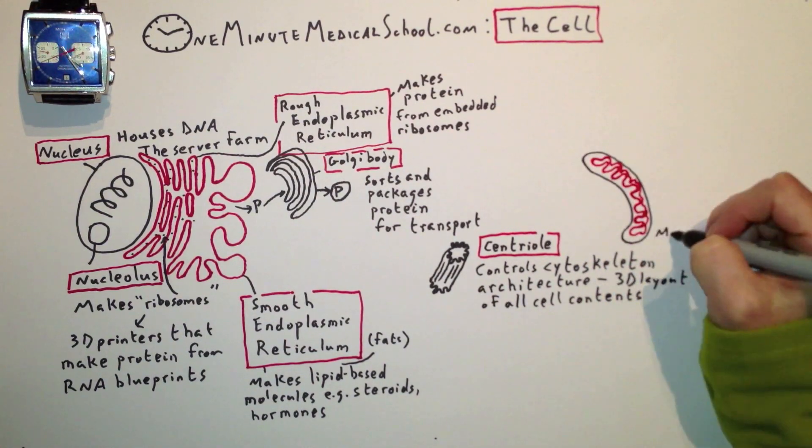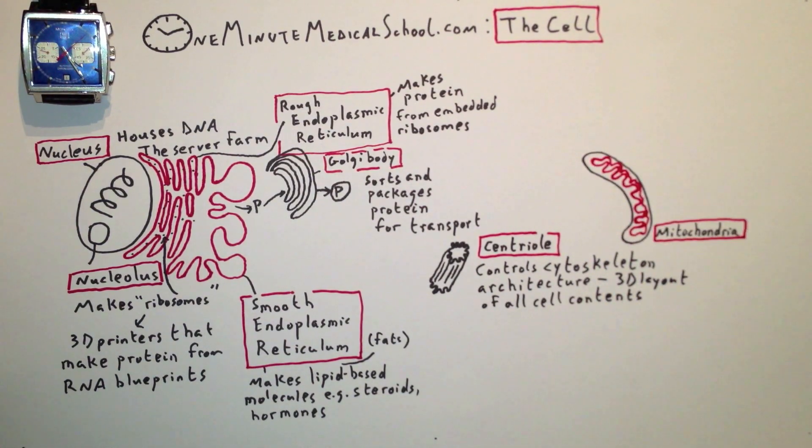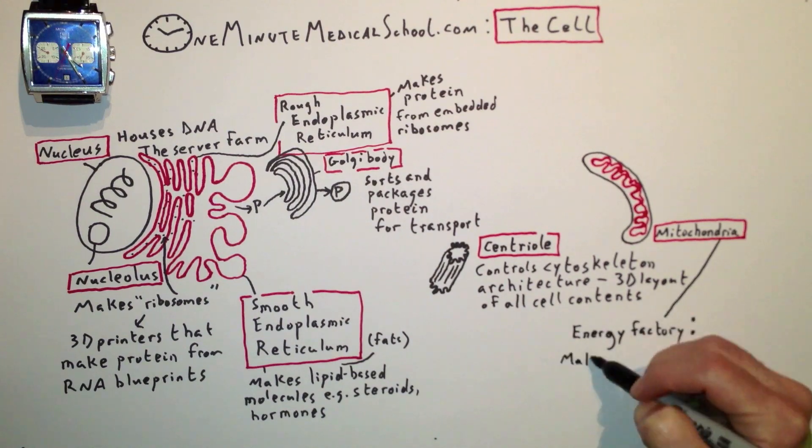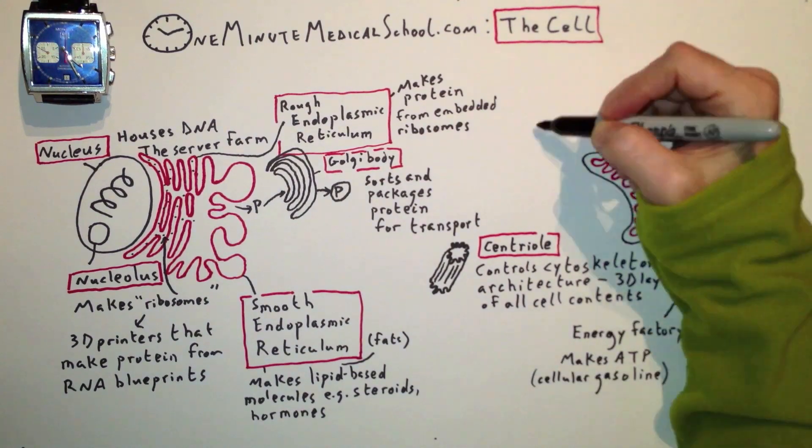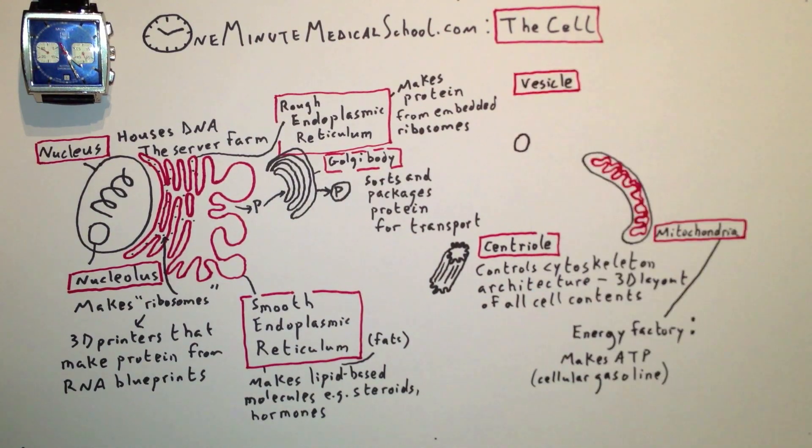The mitochondria is the energy factory of the cell, which makes ATP, which is cellular gasoline.